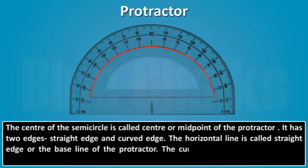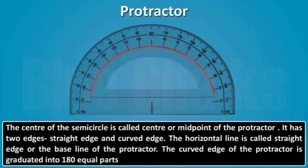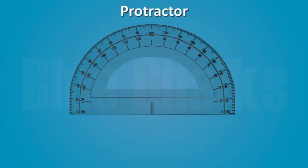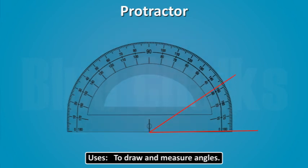The curved edge of the protractor is graduated into 180 equal parts where each part is equal to 1 degree. The parts are marked from 0 degree to 180 degree on both sides. Protractor is used to draw and measure angles.